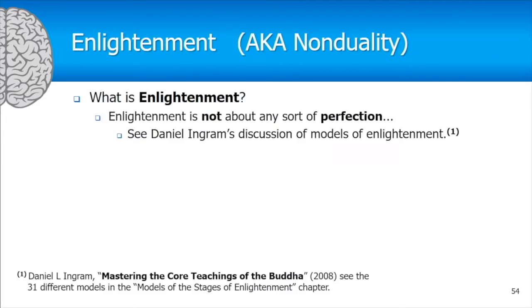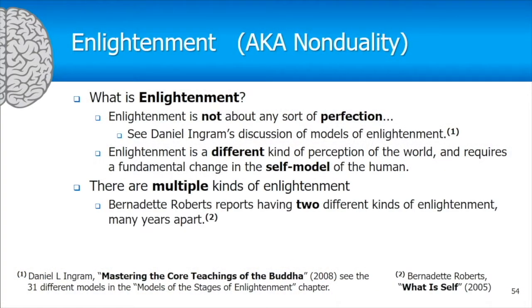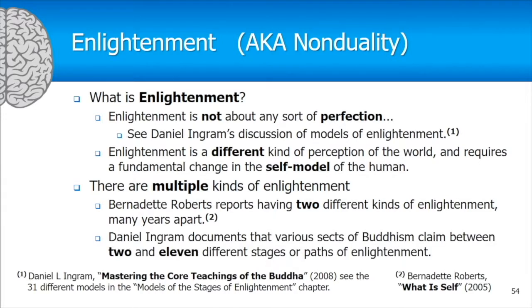Enlightenment is not about any kind of perfection. Daniel Ingram, who wrote Mastering the Core Teachings of the Buddha, examined 31 different models of enlightenment, many of which involve perfection of one kind or another. He rejects all those models except the non-duality model. Enlightenment is therefore about a different kind of perception of the world requiring a fundamental change in the self-model — giving up the idea that you are your autobiographical self-model and your body.